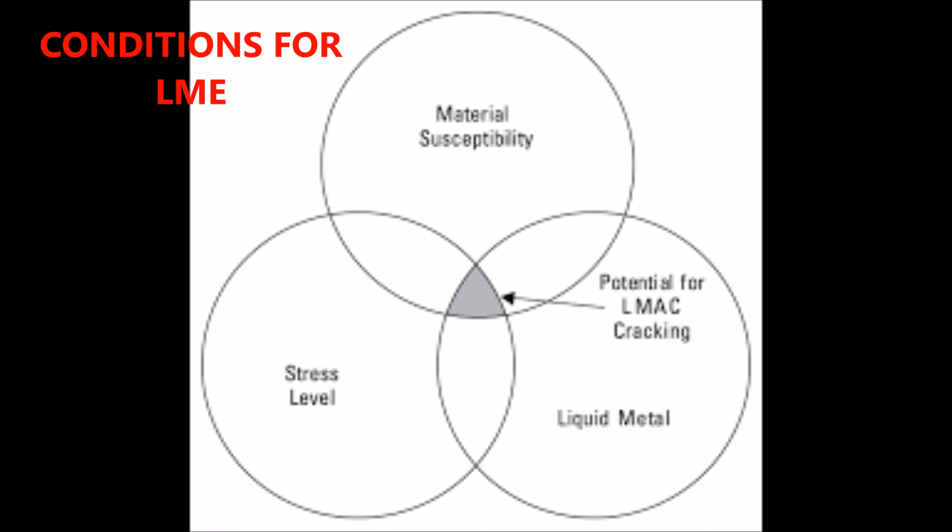There are three conditions necessary for liquid metal embrittlement to occur: first, using a material that is susceptible to liquid metal embrittlement, such as stainless steel, nickel alloys, or age-hardened alloys; second, stress in the component, either internal or applied; and third, the presence of a liquid filler metal.